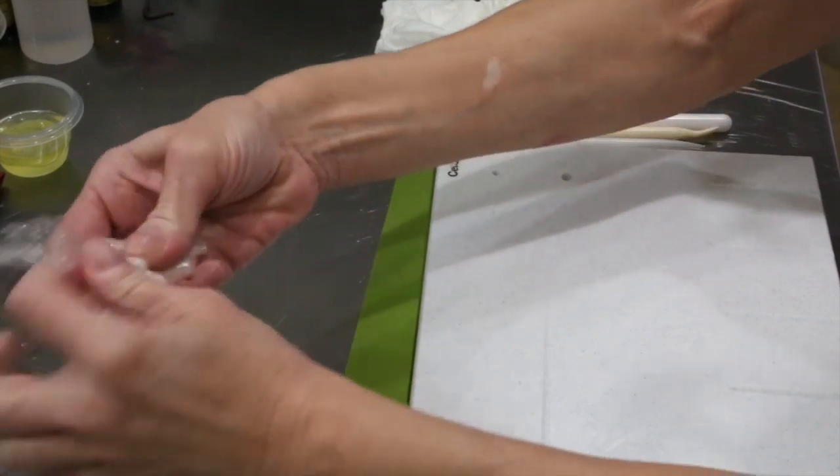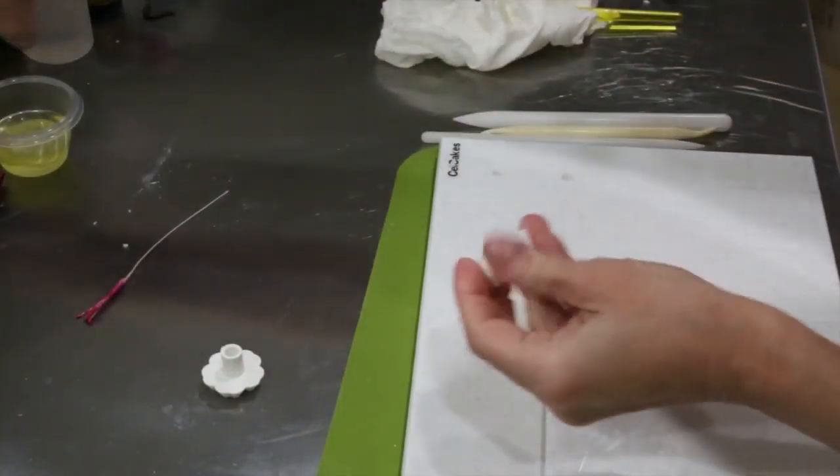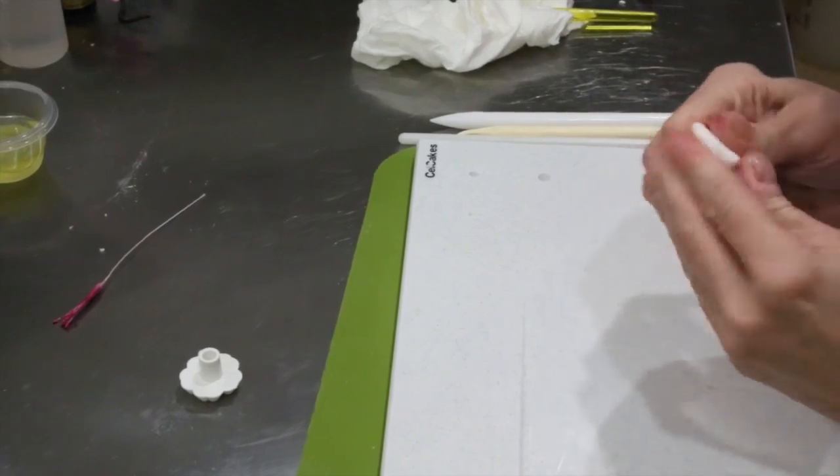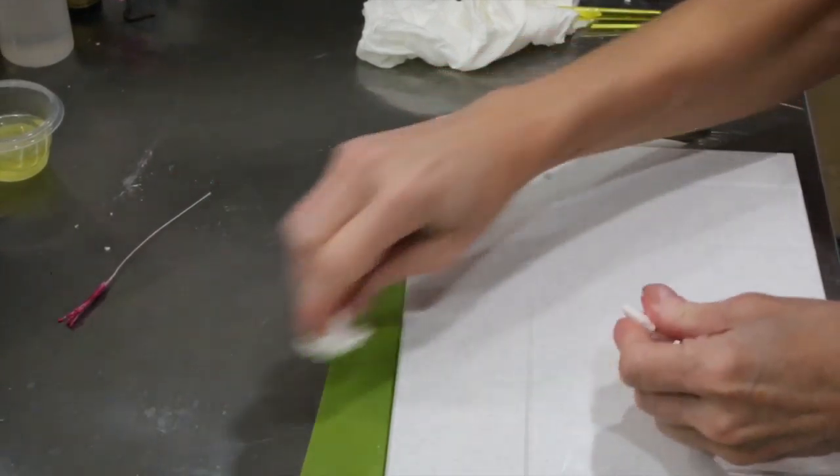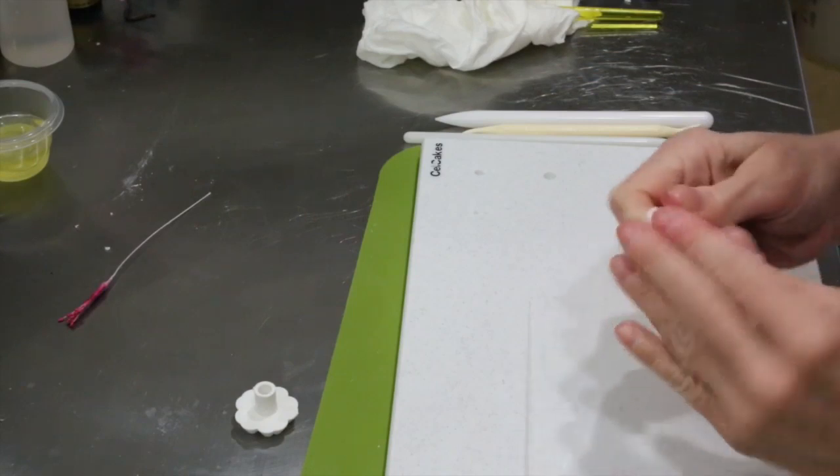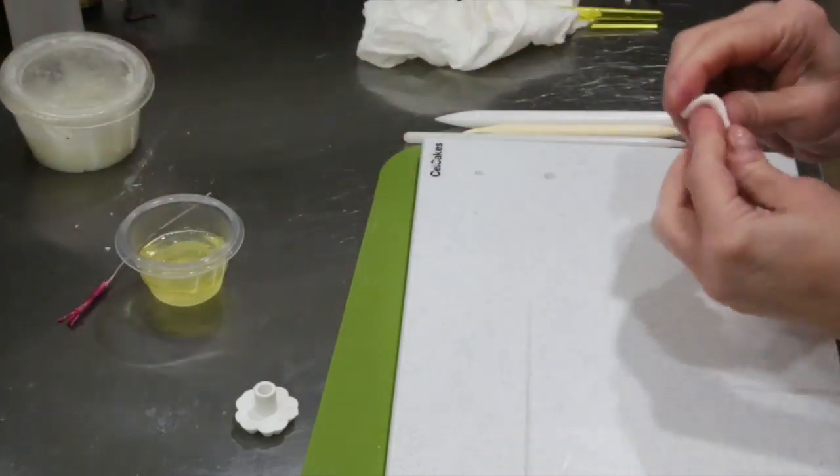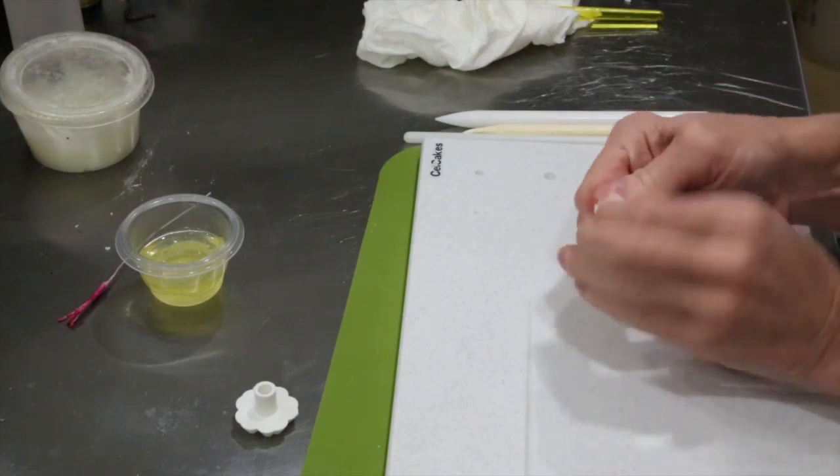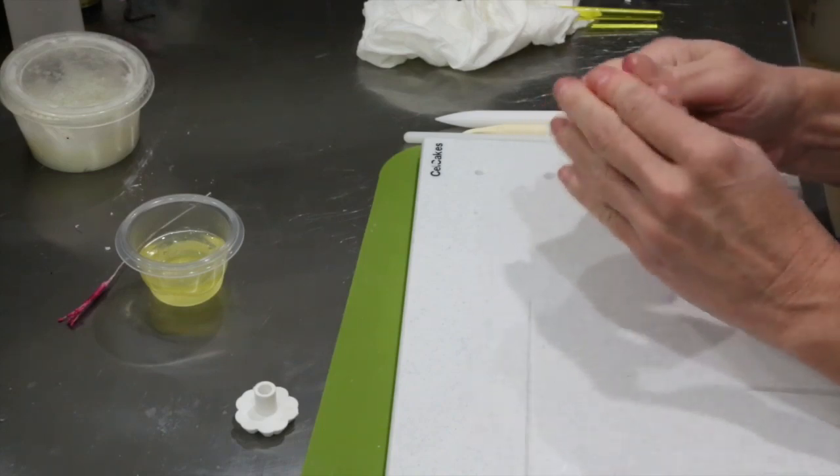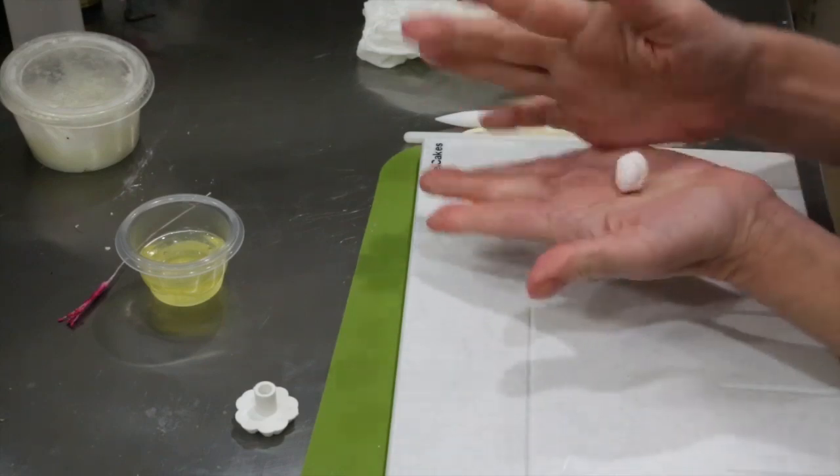We're going to take a little bit of gum paste. You don't need a lot for the individual blossoms. Now I do not have a cherry blossom cutter, so I am using Orchard Products Primrose Cutter, which ended up working out perfectly. I actually do not like to buy a zillion cutters when I can use cutters that I already have in my stash. So we're going to condition the gum paste with a little bit of Trex, or you can use Crisco, or some sort of vegetable fat.